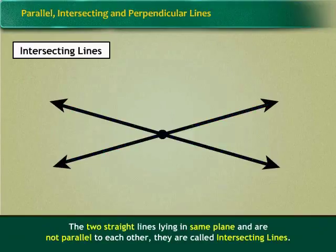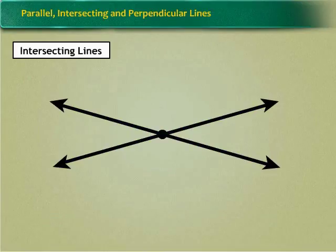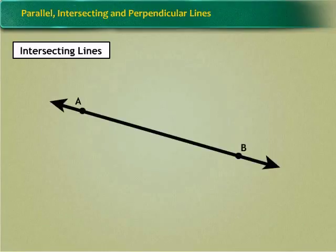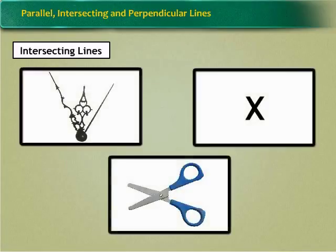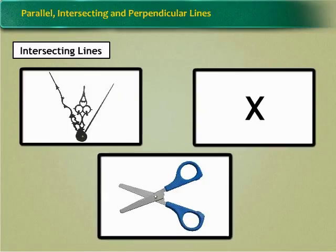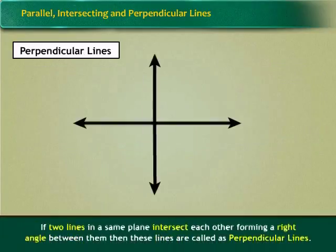The two straight lines lying in same plane and are not parallel to each other, then they are called intersecting lines. The figure given here shows two lines AB and CD which are not parallel. Such lines either intersect at a point O or will intersect at a point O when produced. Examples of intersecting lines are hands of a clock, the letter X, scissors, etc.